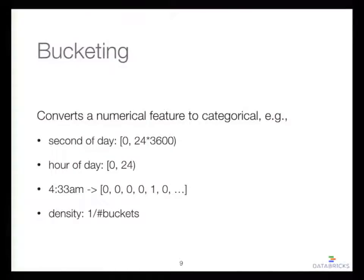Another source is bucketing — converting a numerical feature to categorical. For example, working with time of day to predict activity frequency. If I apply a linear method, I assume it has a linear effect, but that's not right — people have high activity at 9 a.m. or 2 p.m. So you transform time into categorical features like hour of day, creating 24 buckets. After this mapping, the data becomes sparse, with density 1 over the number of buckets.